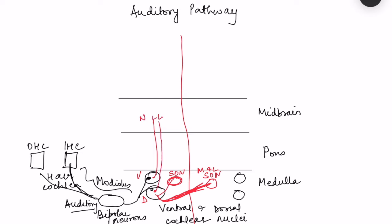Some fibers go to the nucleus of the lateral lemniscus, forming the lateral lemniscus bundle, and some fibers also project to the reticular formation in the pons. Each group of fibers undergoes different processing, which is why there is such extensive diversion of pathways.